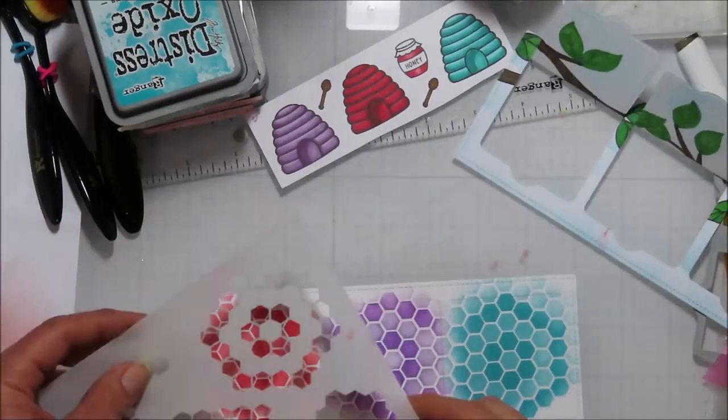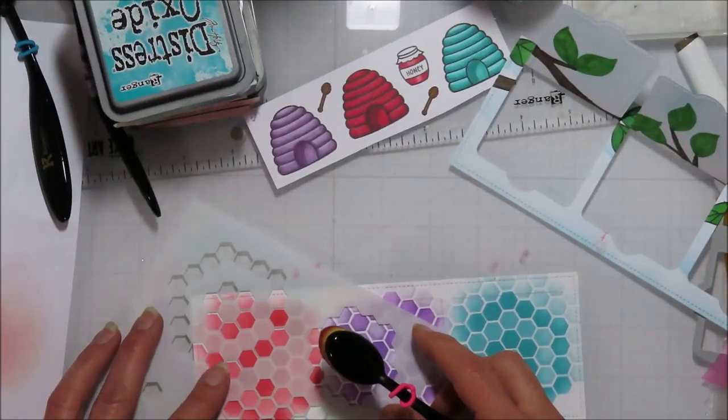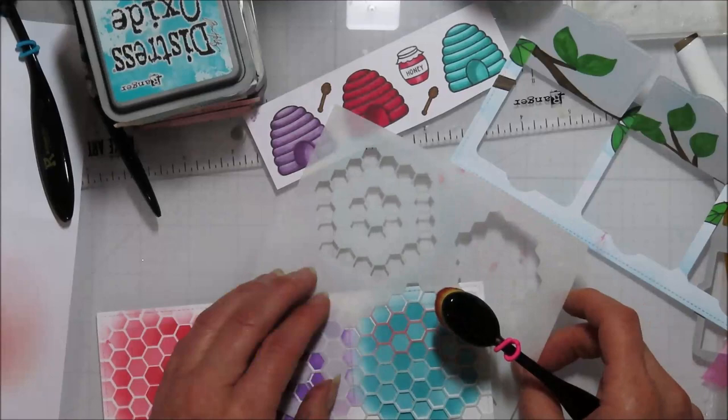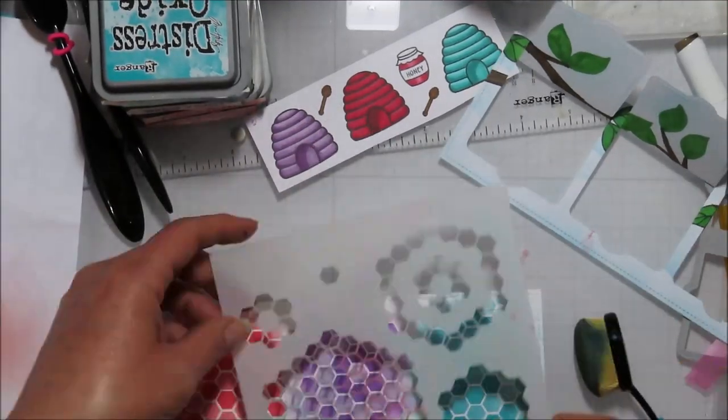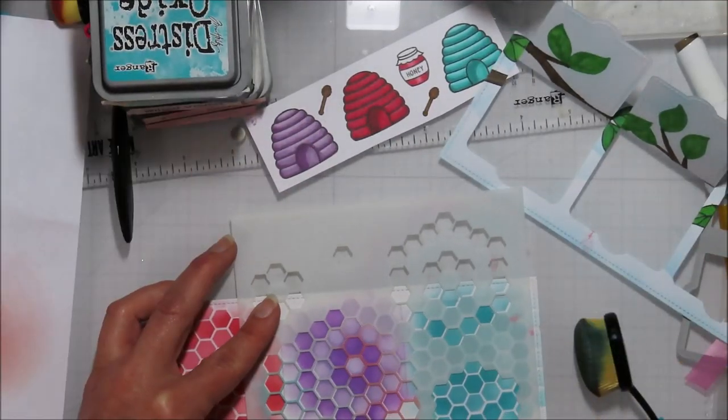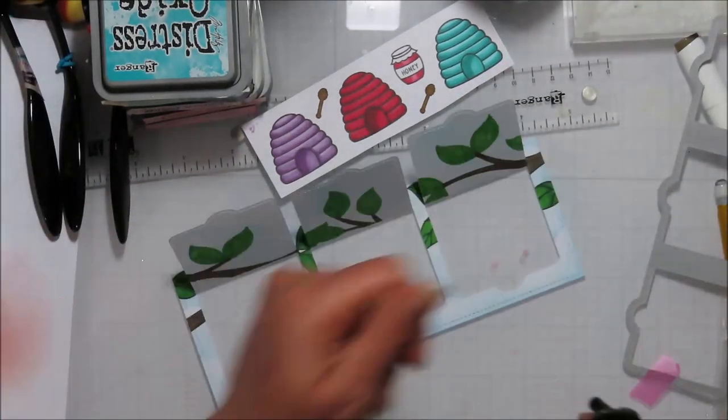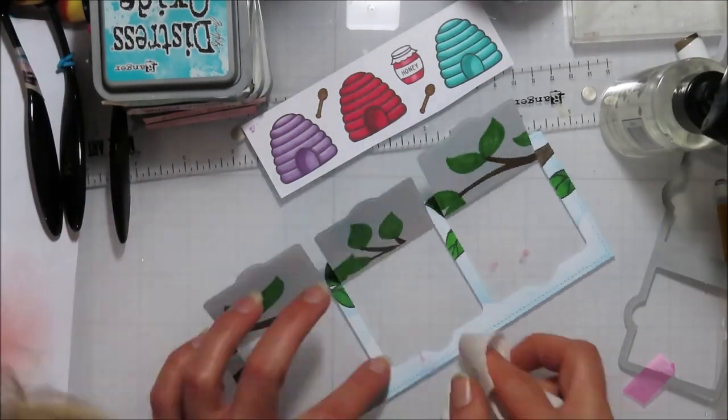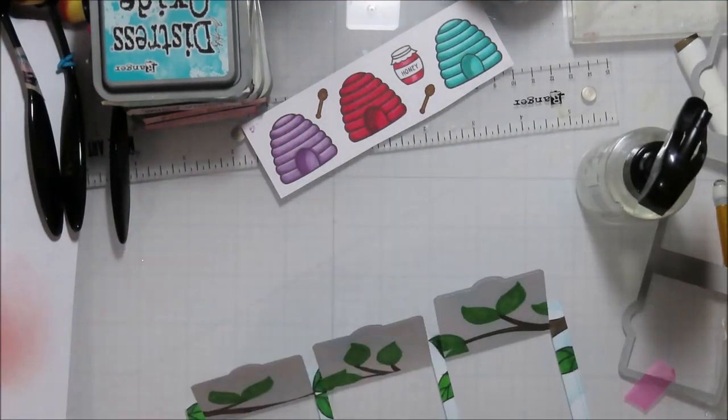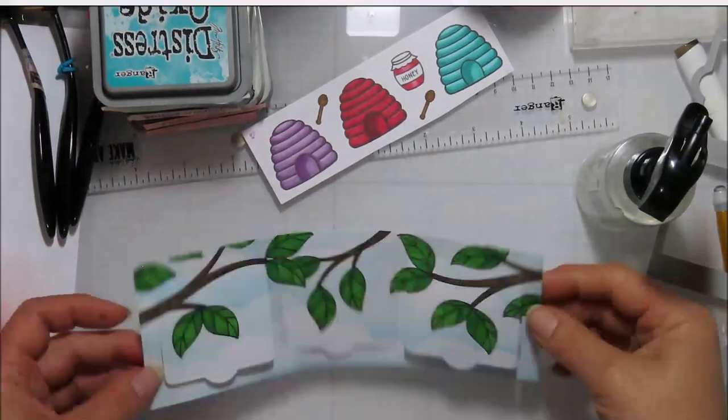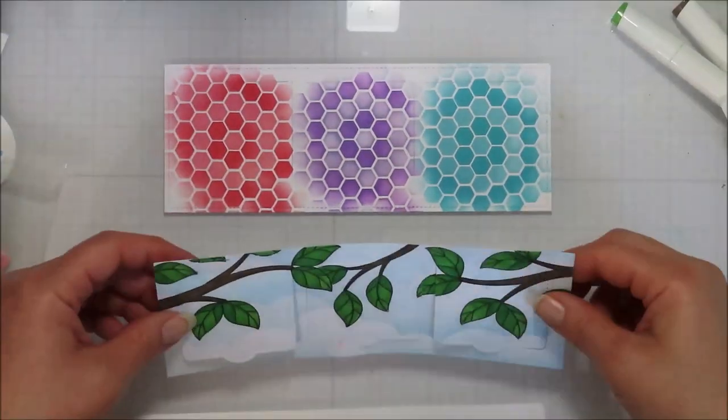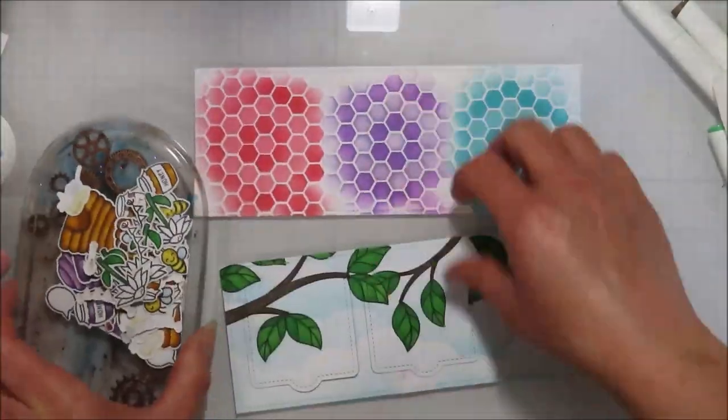And then I'm just going to lay that over the top to make sure. And I needed to fill in just a little bit here. Nothing dramatic. So I just rotated my stencil so I didn't actually clean it again in between those colors. And then of course inky fingers and I got ink on the front of my panel. I'll fix that later.